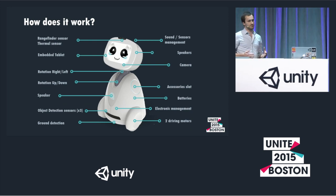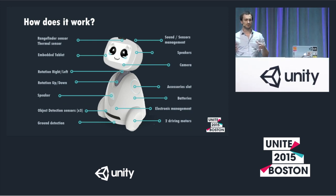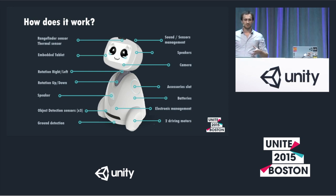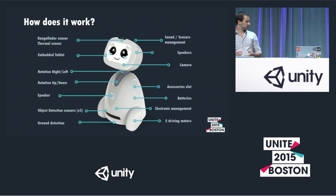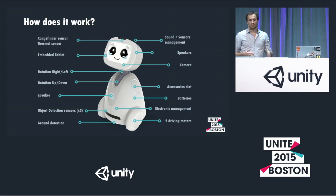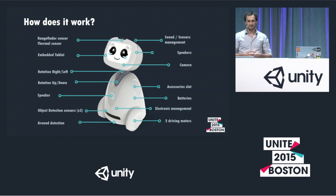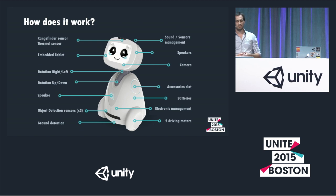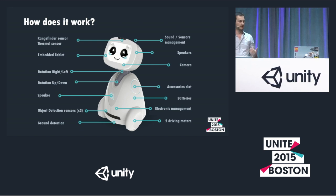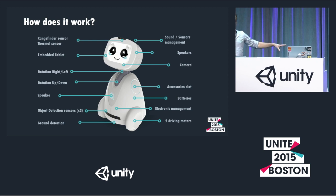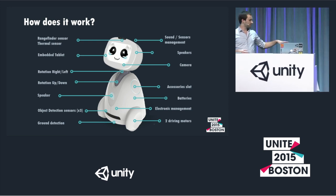Here is the robotic platform. It's a robot with motors, so you can control the motors. It has four degrees of freedom and a lot of sensors — a thermal camera, distance sensors, ground sensors. It also has speakers, a microphone, and it is an Android tablet inside which makes the mind of the robot.